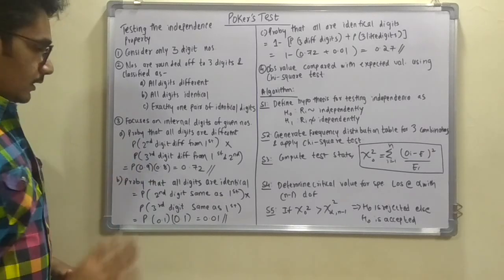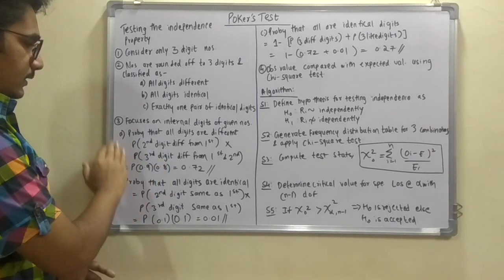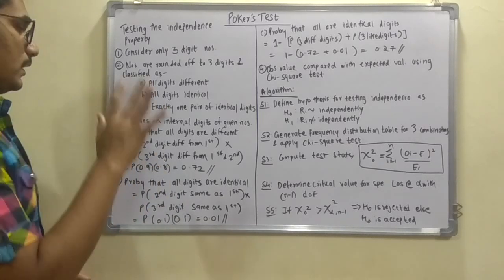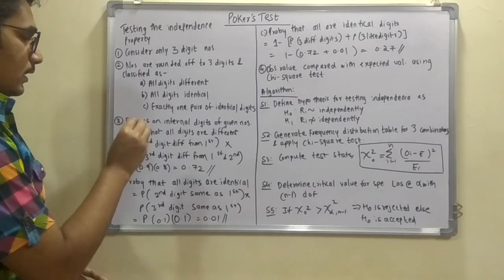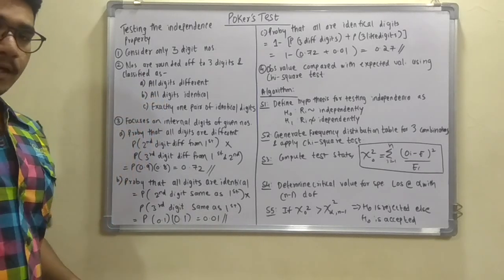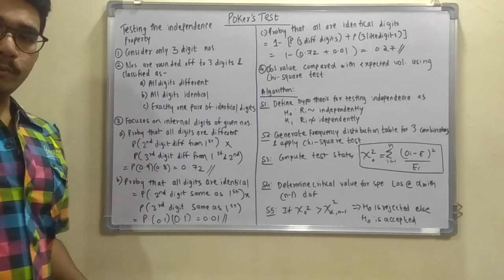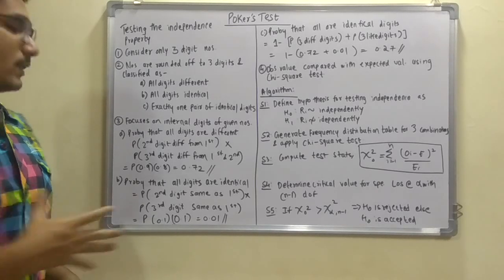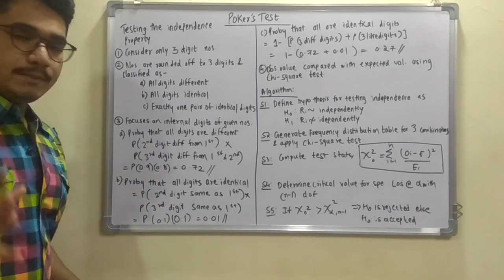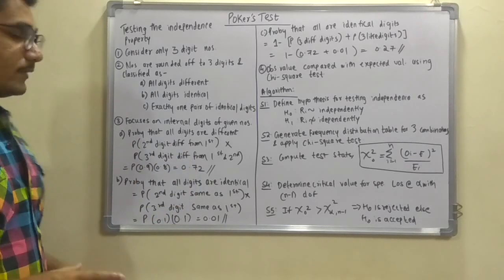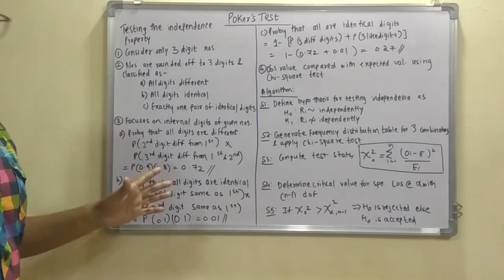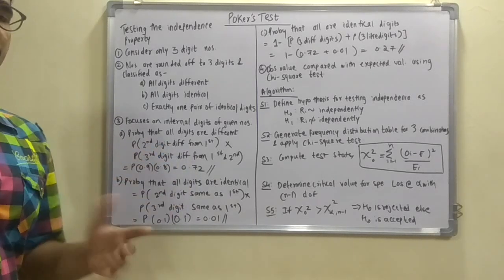So you get for this, the probability that all the digits are different, so you can calculate the product that is P into N. While solving problems I will discuss regarding that. In that you have to multiply with this value, that is 0.72, which is standard for the probability that all the digits are different.